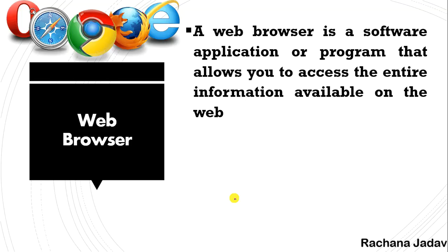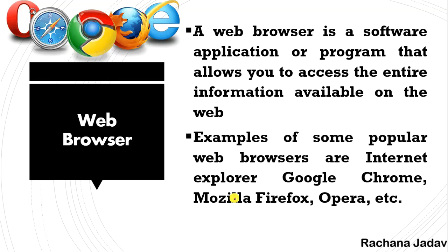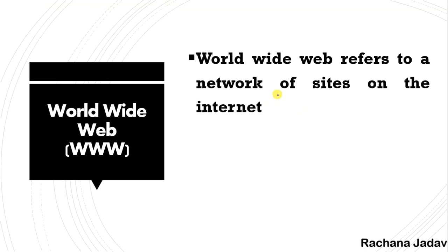Now, web browser — there are many web browsers available. We mostly use Google Chrome on our mobile phones as well. But there are many others: Google Chrome, Internet Explorer, Mozilla Firefox, and Opera. These are all examples of web browsers on which you can access information.